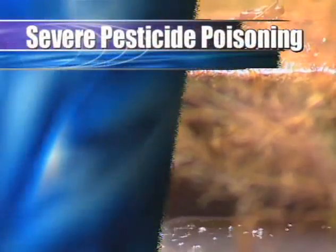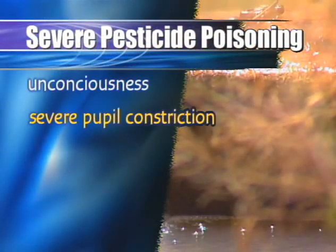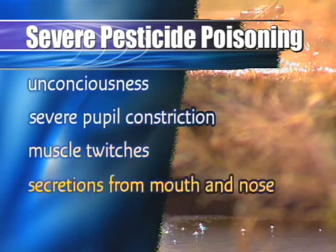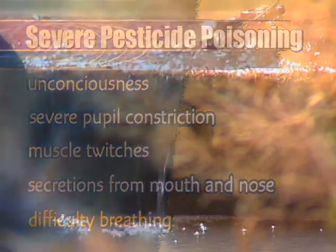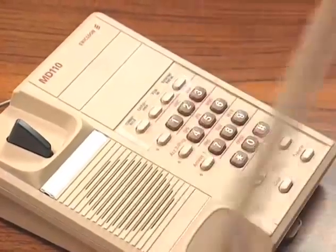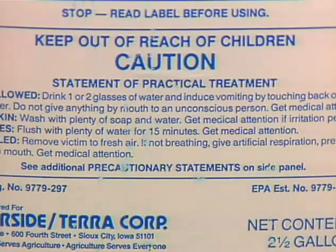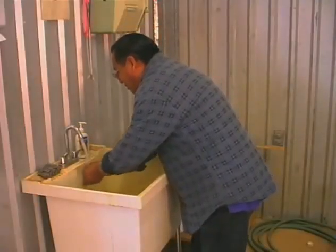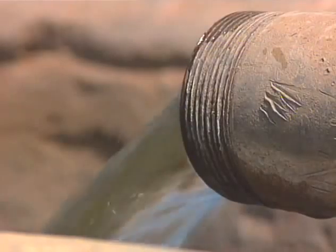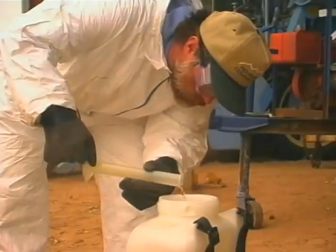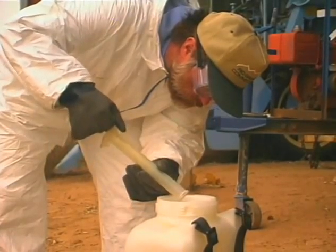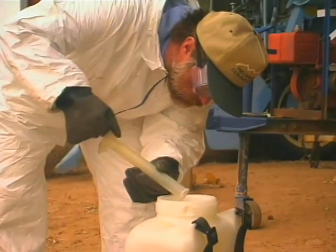With severe poisoning, the person will become unconscious, experience severe pupil constriction, muscle twitches, secretions from the mouth and nose, and difficulty breathing. If pesticide poisoning occurs, call the paramedics immediately, then read the label for any first aid information. Pesticide labels contain practical treatment information. If skin contact has been made, remove the pesticide quickly. If the pesticide has been splashed in the mouth or swallowed, rinse the mouth out immediately. Pesticides can be used safely if labels are read, proper equipment and protective clothing is worn, and directions are followed precisely.